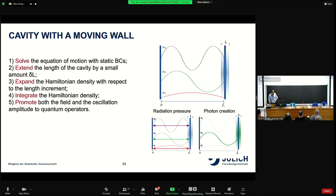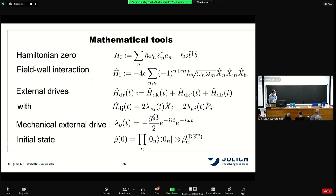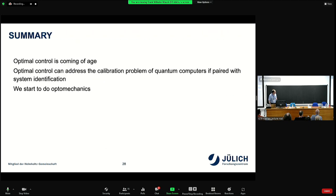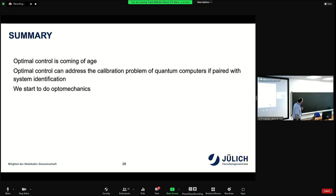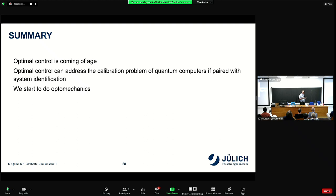I will probably not talk about the wee bit of optomechanics because that is a big change. My group has started to do optomechanics, and we're happy to discuss about this. So I hope I could convince you that the optimal control that we have been working on 15 years has been coming of age, in the sense that after being mostly theoretical or quite simple systems, it can be applied, and that the calibration problem of quantum computers can be addressed if you combine this with the right AI tools. With that, thank you very much for your attention.